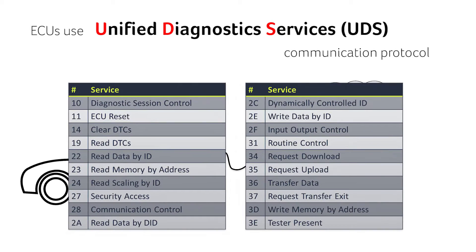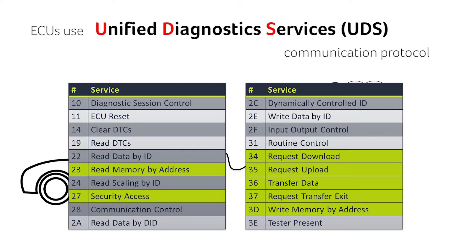Examples of UDS services are data transfer, request download or upload, read memory by address, and many others. In order to prevent malicious use of these services, ECUs verify if an operation is allowed by performing a user authentication. But how secure is that authentication?